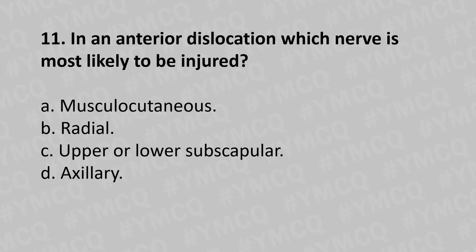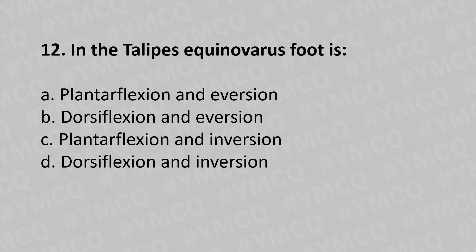Moving to our 11th question: in anterior dislocation, which nerve is commonly injured — option A musculocutaneous, option B radial, option C upper or lower subscapular, option D axillary. And the answer is option D axillary.